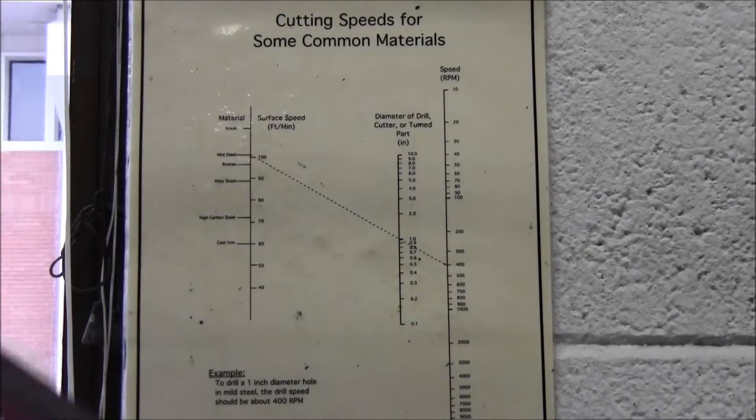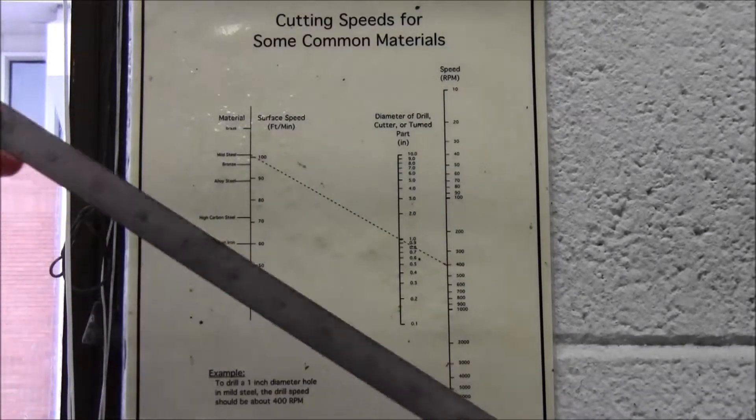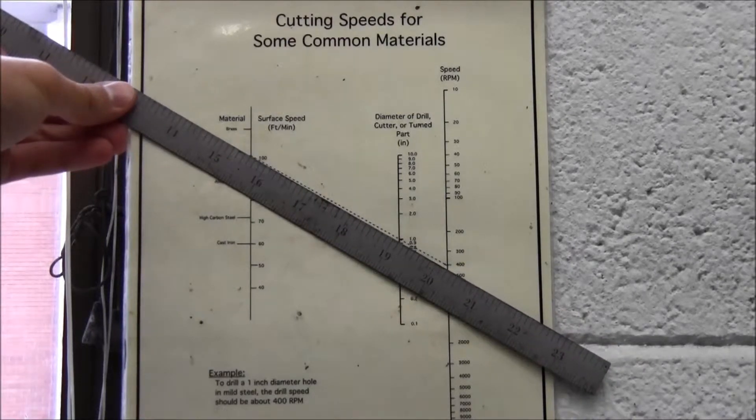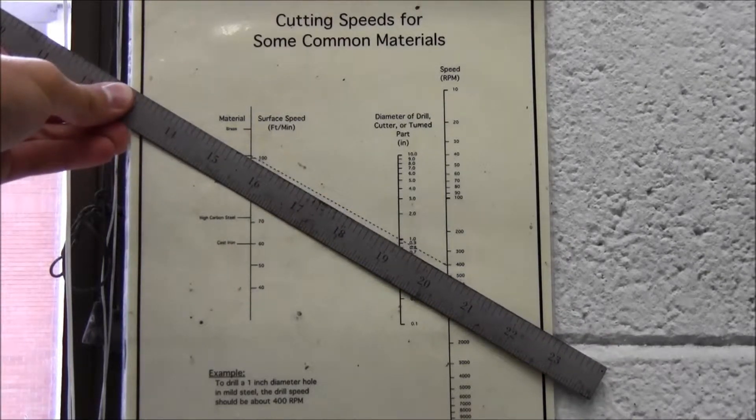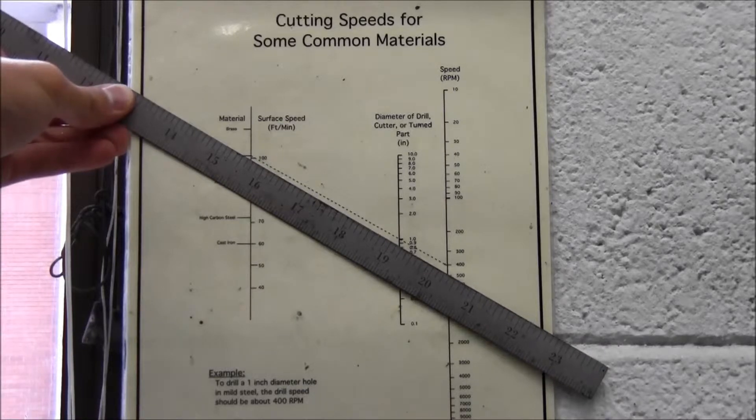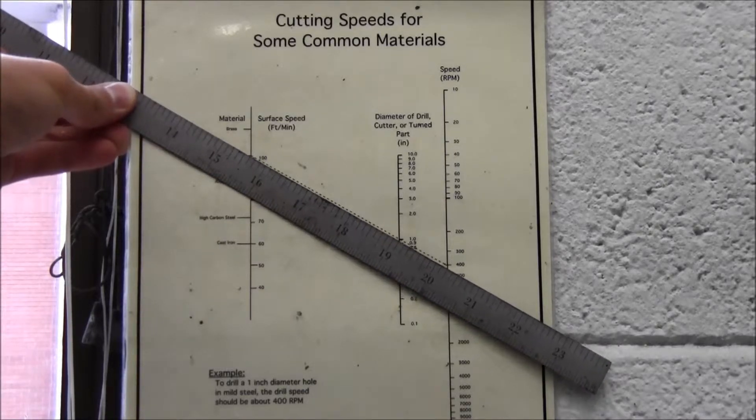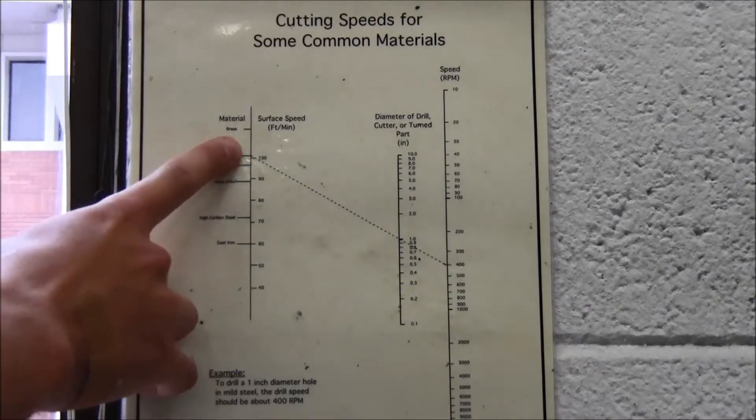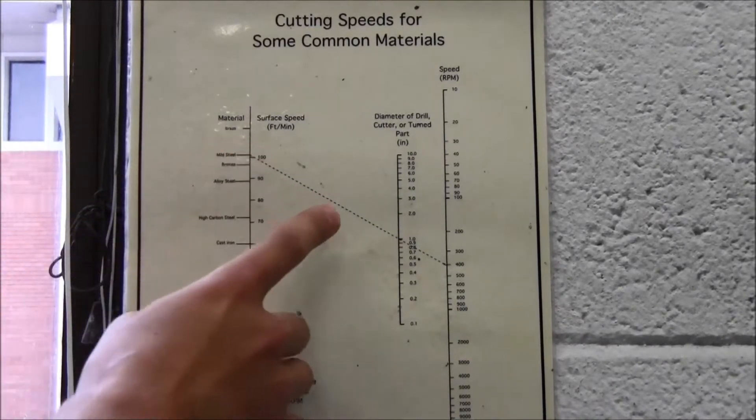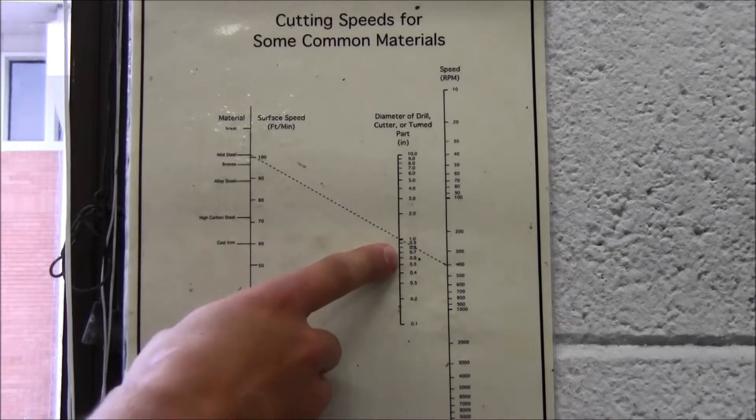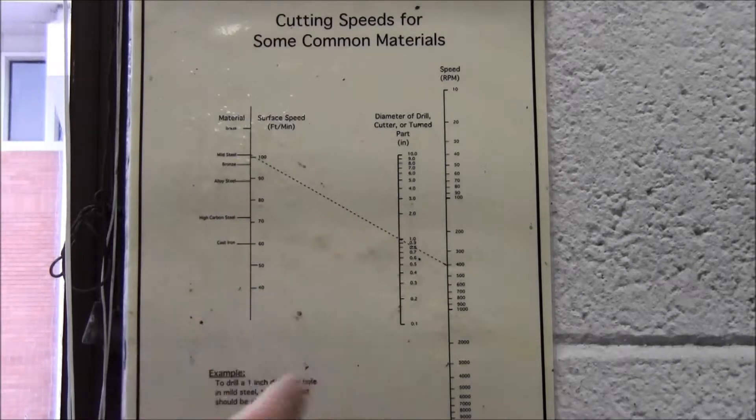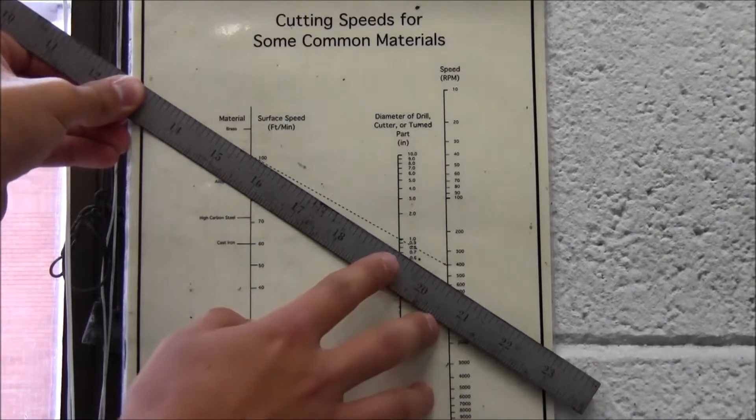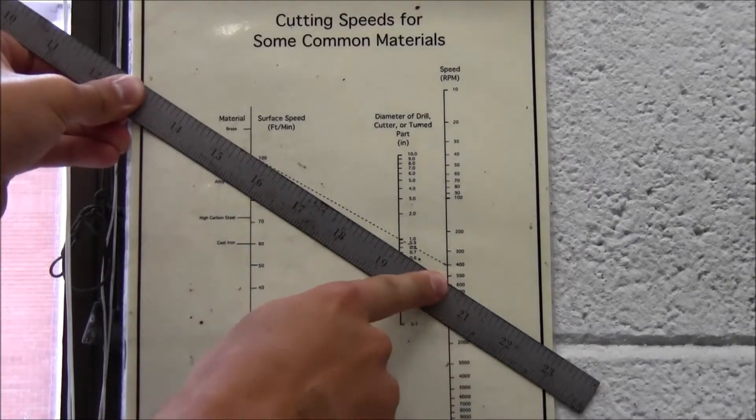Before you begin cutting your piece, you must ensure that you have the correct RPM set on the milling machine. To do this, place a straight edge on the cutting speed chart along the parameters that you have selected. So we will be cutting mild steel, and the end mill I chose is .625 inches in diameter. So placing the straight edge along those parameters yields an RPM of 600.